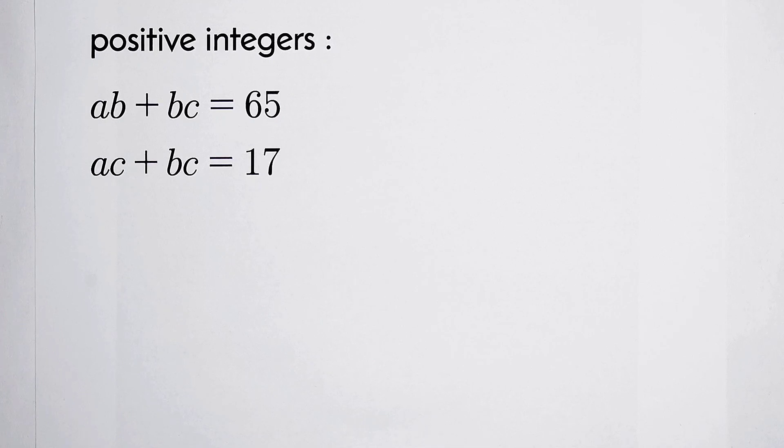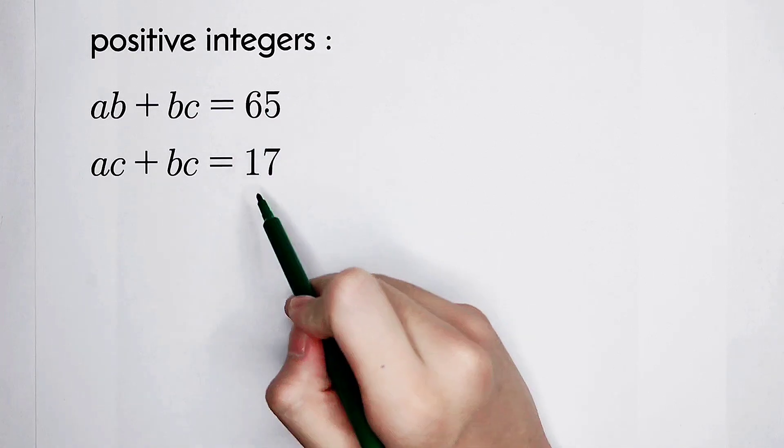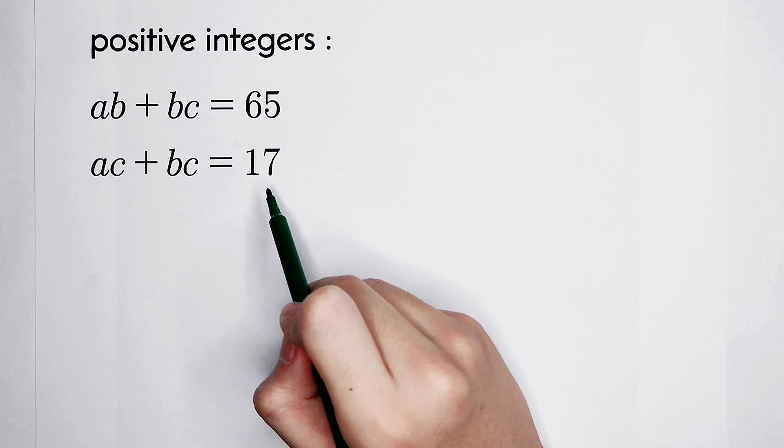So actually, the left-hand sides have the same forms. And what about the right-hand sides? 65 and 17, which is lucky.